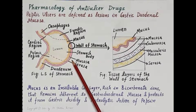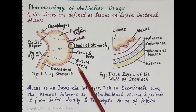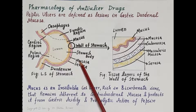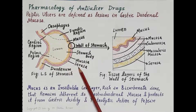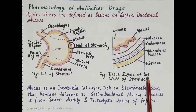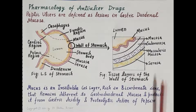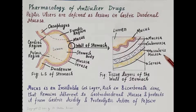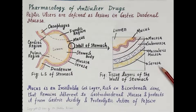The tissue layers of the stomach wall are: the innermost layer is the mucosa, below which is the submucosa, then the muscularis mucosa, and the outermost protective layer is called the serosa.